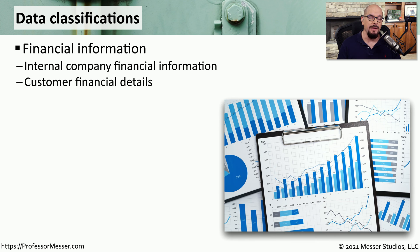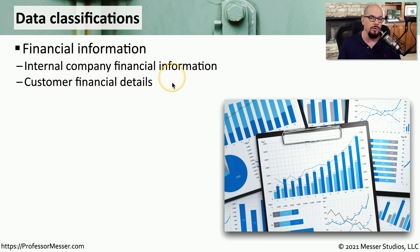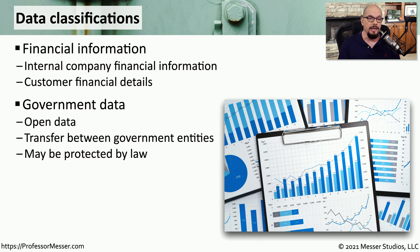When working with companies, you may find there are certain vertical markets that have a standard as to how data might be used. For example, a financial organization would have your personal financial details and perhaps financial details of other organizations, and there might also be additional laws and regulations on how financial information can be used. The data collected by our government is often considered open data that anyone might have access to, though this is not universally the case — a large percentage of the data collected by the government is information that you would have access to.